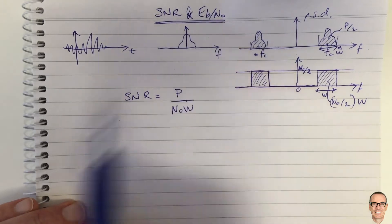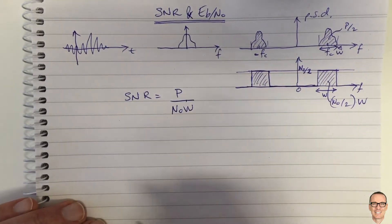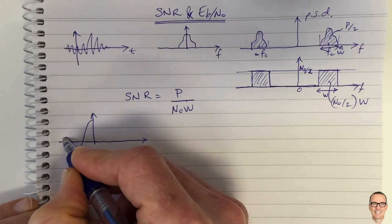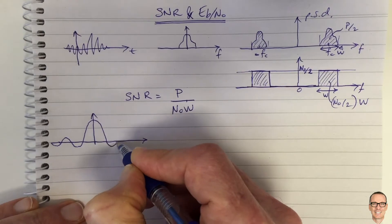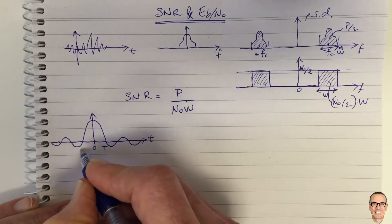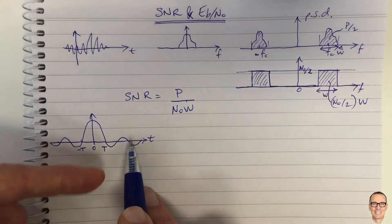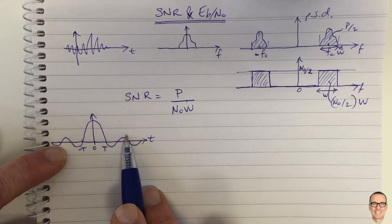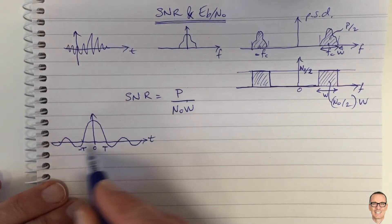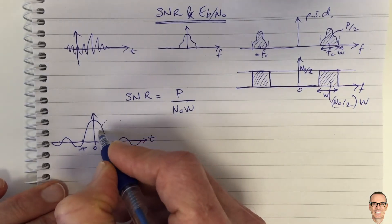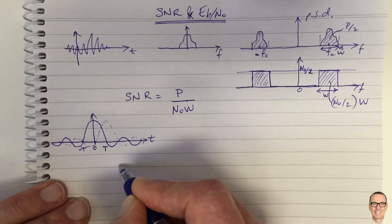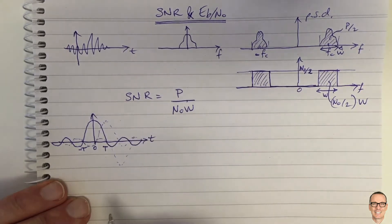What is Eb/N0? This comes in when we start considering digital signals. With digital signals in the time domain, we consider the ideal case of a sinc function pulse shape. You might send this waveform to represent a digital one, and the inverse of this waveform to represent a digital zero. Every capital T seconds we send one of these waveforms.